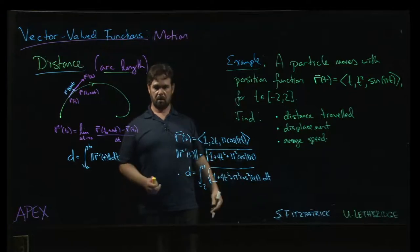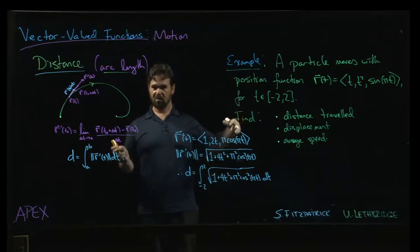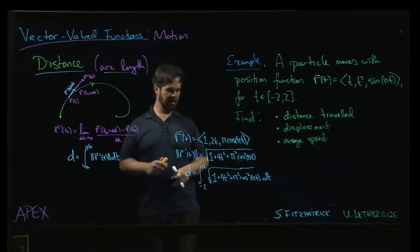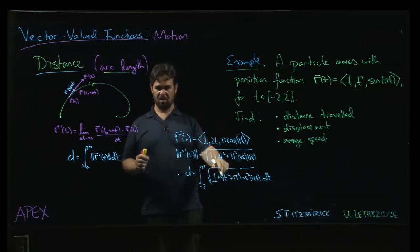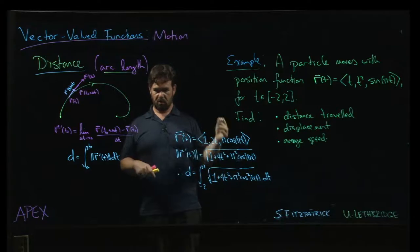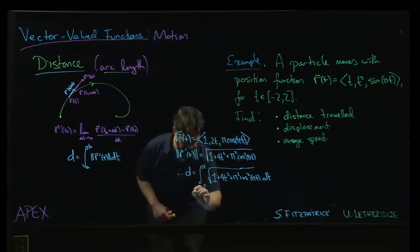So we pull out our trapezoid rule, our Simpson's method, one of these numerical techniques. Or more likely, we just take this integral and plug it into the computer. Wolfram Alpha, something like that.